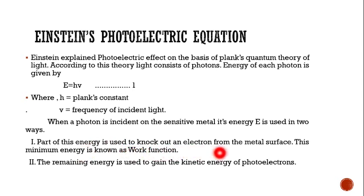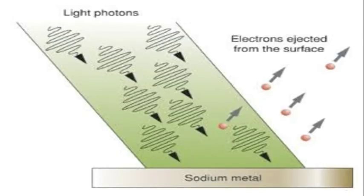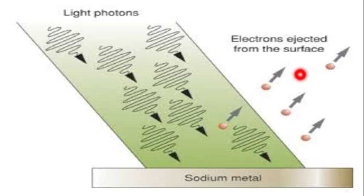The remaining energy after overcoming the work function is used to provide kinetic energy to the photoelectron. Here you can see the figure for Einstein's photoelectric effect. Photons of light are incident on a sodium metal, which is a very sensitive metal, and free electrons are ejected from the metal surface — these are called photoelectrons.